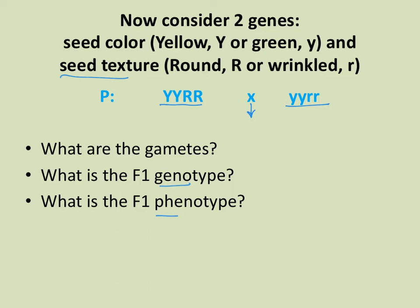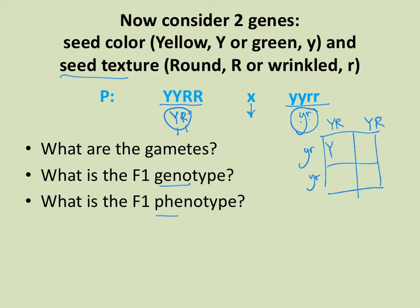The homozygous dominant parent would only be able to produce big Y, big R gametes — each gamete has both genes in it, a Y and an R. The homozygous recessive parent would only produce little y, little r gametes, again with both genes. So all offspring from this cross are going to be heterozygous for both genes. The F1 genotype is big Y, little y, big R, little r, and the phenotype will be yellow and round — they have at least one dominant allele for both, so they'll have the dominant phenotype.